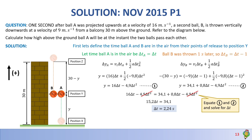Now we substitute ΔT = 2.24 seconds back into Equation 1 to find Y — the height above ground where the balls pass each other: Y = 16 × 2.24 − 4.9 × (2.24)². This gives us Y = 11.25 meters.